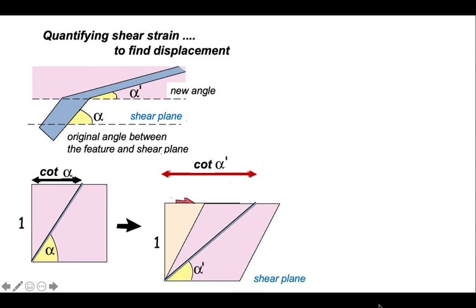And alpha prime is that distance marked out along the shear plane at the top of our diagram. So what is cot alpha prime? Cot alpha prime is equal to the distance of cot alpha plus the extra bit that's been added to it because of the imposed shear strain, gamma. So cot alpha prime is equal to gamma plus cot alpha.